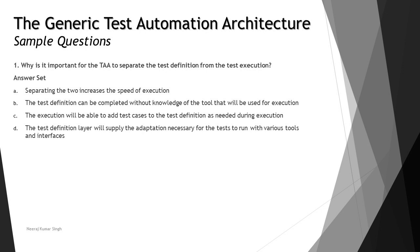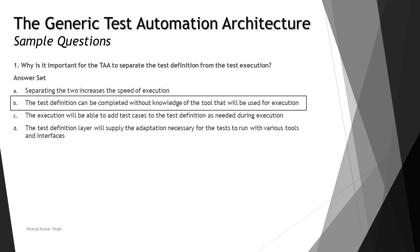Getting back to the very first question: why is it important for the TAA, that is Test Automation Architecture, to separate the test definition from the test execution? The test definition layer and test execution layer are two different things. Execution relies on the tool, and test definition is completed earlier in the cycle whereas execution takes place later. If you later decide to go with another tool, the test definition would also need to be redefined, so it is very important they are done separately. The right answer is B: the test definition can be completed without knowledge of the tool that will be used for execution.